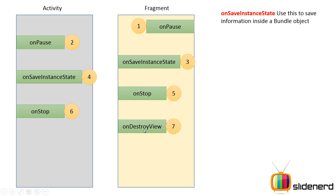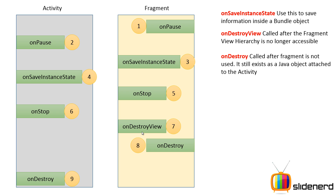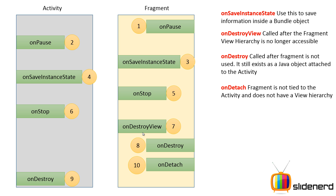Then on destroy view is called — this method is called after the fragment's view hierarchy is no longer accessible. Up until this point the fragment existed as both a Java object with its own layout file, but after this point it still exists as a Java object but its view hierarchy defined in its XML file is not accessible. Then on destroy is called in the fragment — after this point the fragment is completely destroyed and exists as a Java object to the activity but you can do nothing with it. Finally, on detach is called, which is where the fragment that was tied to the activity is actually untied, and after this point it is not associated with anything.